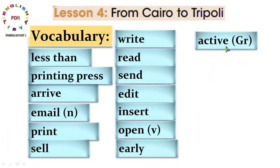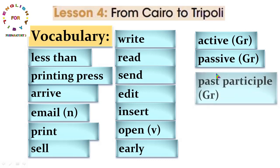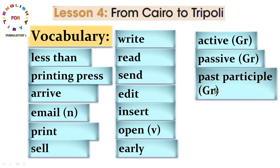في القواعد: Active بمعنى المبني للمعلوم، Passive بمعنى المبني للمجهول. Past Participle في القواعد هو The Third Form of the Verb، أو الصيغة الثالثة للفعل أو التصريف الثالث للفعل. Past Participle من الحاجات المهمة التي ستكون في قاعدة المبني للمجهول.